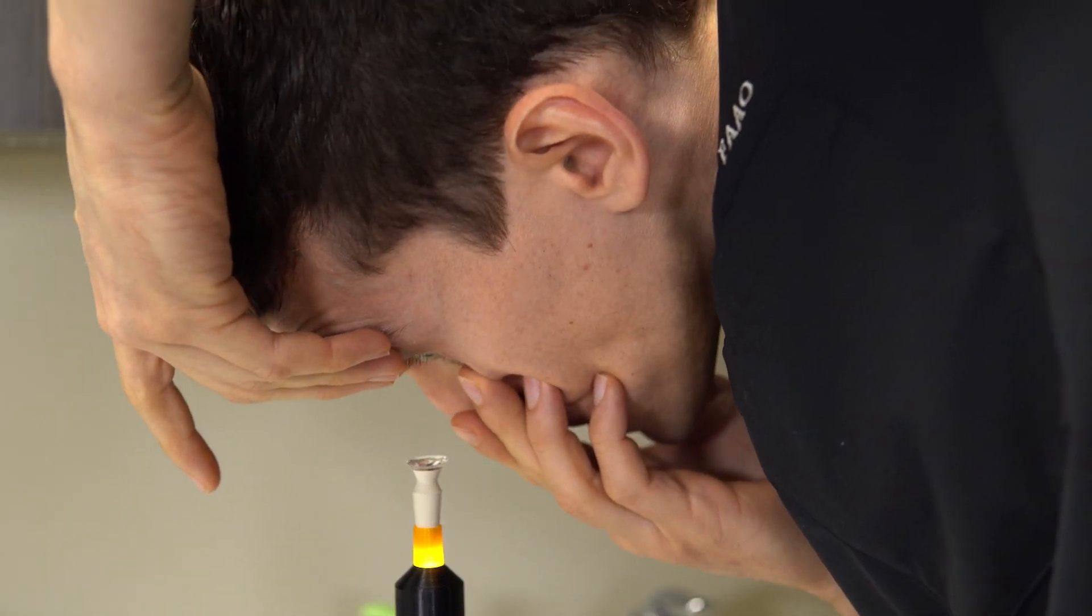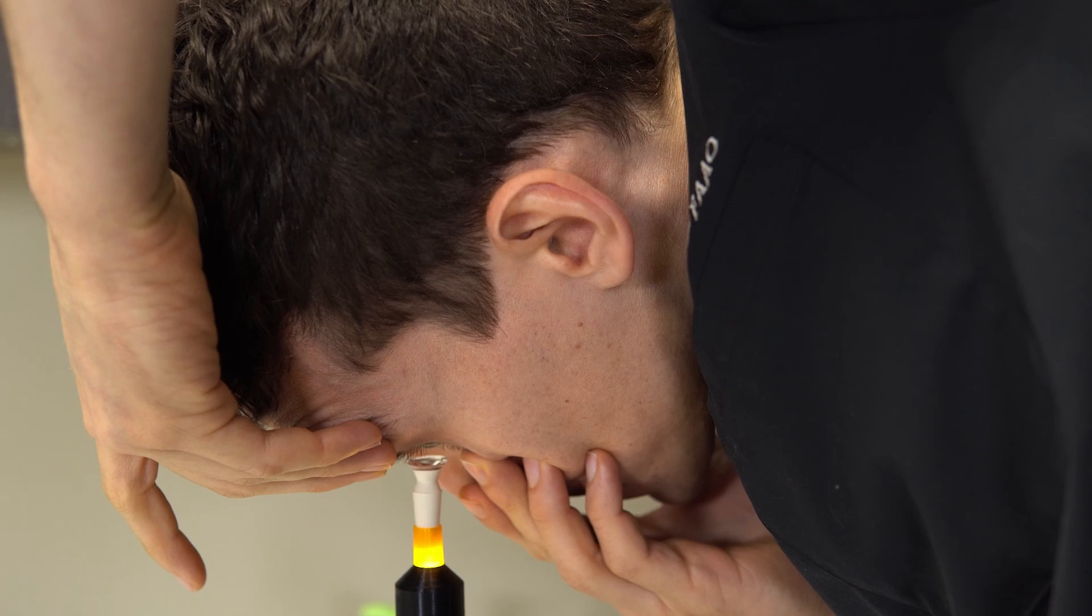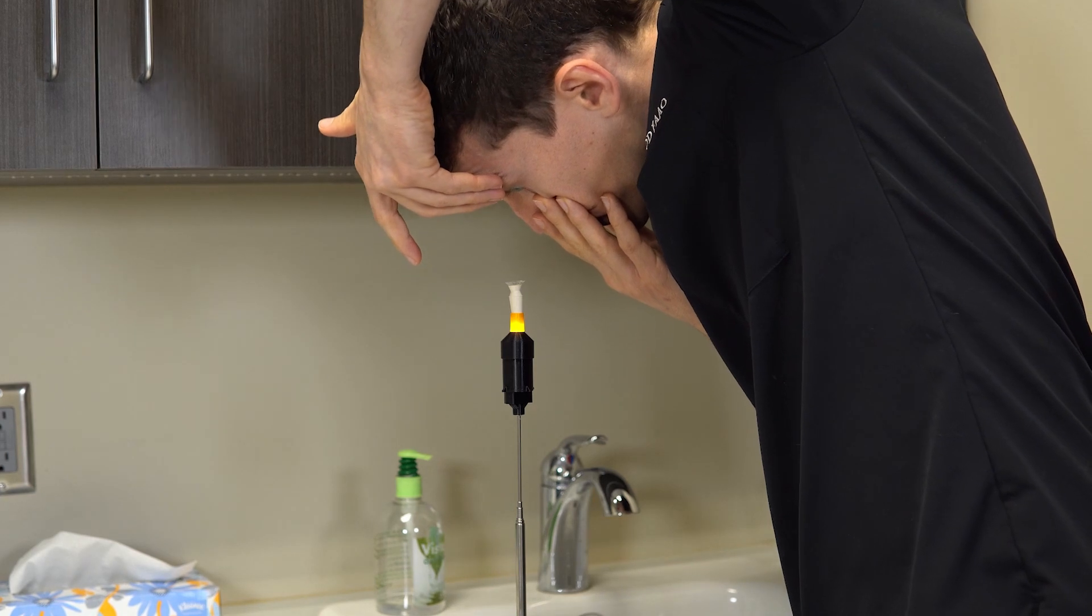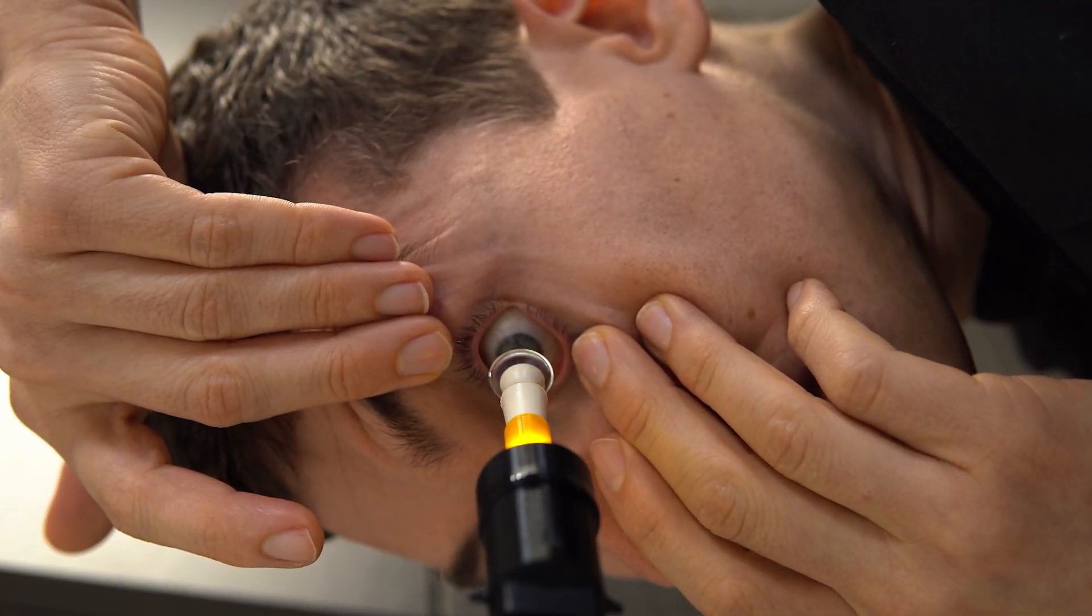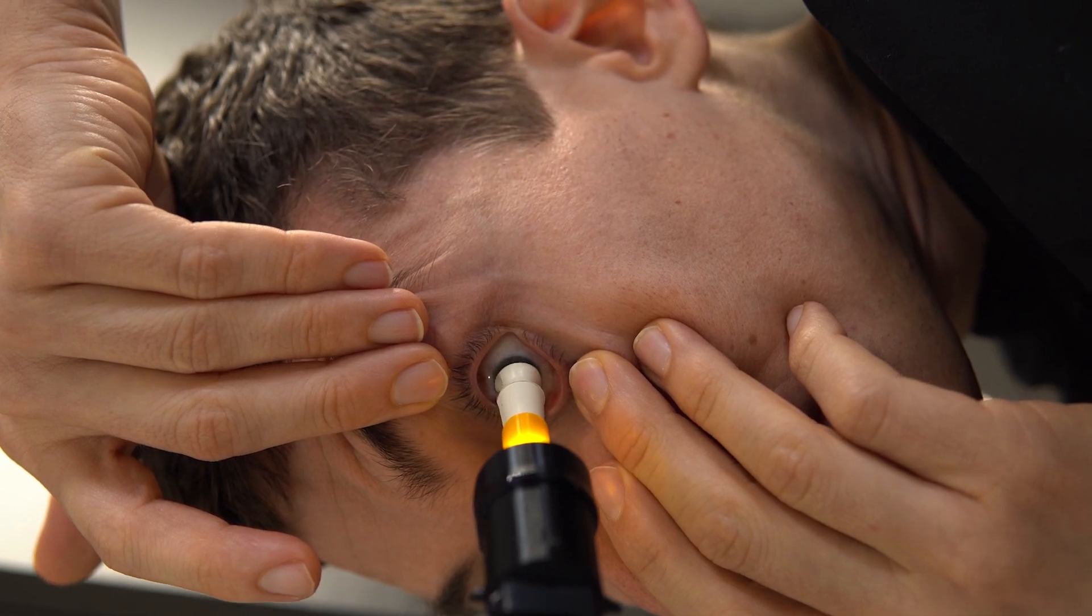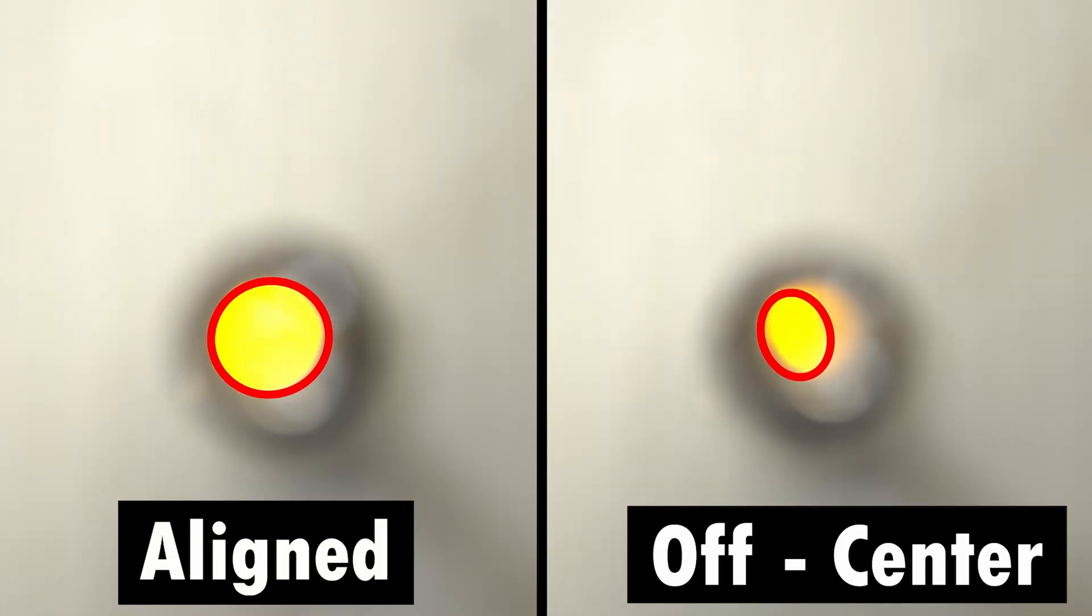Step three: keep both eyes open and slowly move your head down toward the lens until your eye makes contact with the saline solution in the lens. A pro tip here is to focus on the light as you move closer to the lens. The light will look perfectly round if you are lined up with the center of the lens. If the light does not look round, you need to adjust the position of your head until it does.